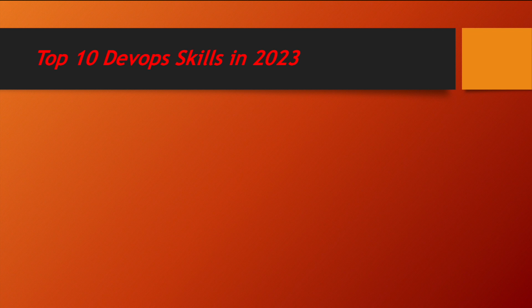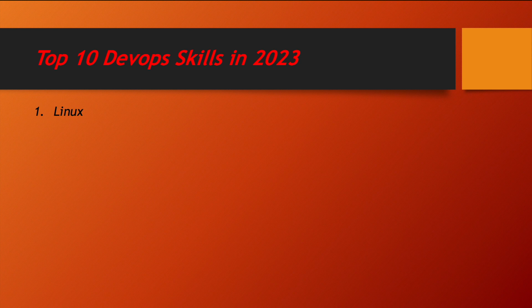Let us begin. The very first thing which a DevOps engineer should know is Linux. Without Linux you can't be a DevOps engineer. So let us make sure that you are going to learn each and every concept related to Linux. Now, where to start Linux? What I will recommend is follow our YouTube channel DevOps Tech Stack — we already have a playlist of Linux. Please follow it religiously.